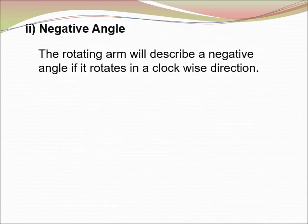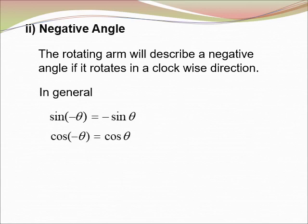For negative angles, the rotation is in the clockwise direction. In general: sin(−θ) equals negative sin θ, cos(−θ) equals cos θ, and tangent(−θ) equals negative tangent θ.